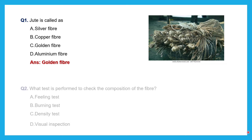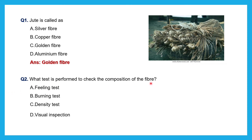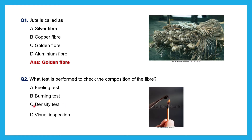Second question: What test is performed to check the composition of the fiber — feeling test, burning test, density test, or visual inspection? In the feeling test, we touch the fabric or fiber to know its texture. By visual inspection, you can know the appearance of the fiber. Density test is done to know the weight of the fiber or fabric. In the burning test, they take a piece of cloth or fiber and burn it.